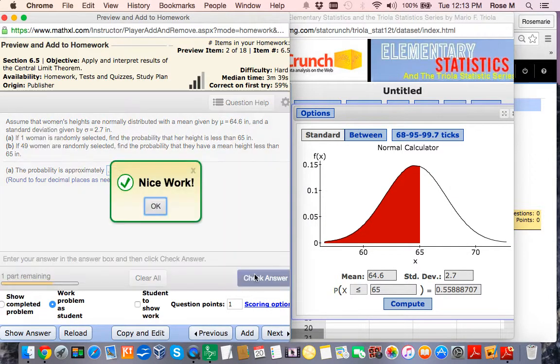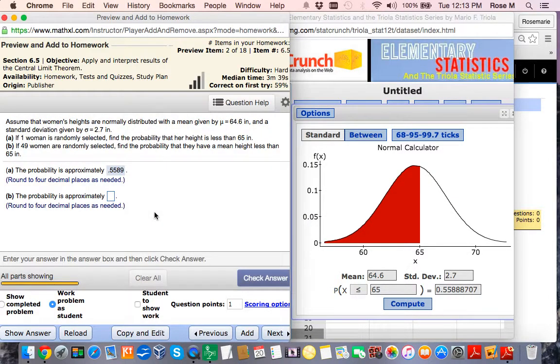And hit check answer. Now the second part involves using the Central Limit Theorem, because now we're selecting 49 women. And when you're using the Central Limit Theorem, you have to remember that the standard deviation changes. You take the population standard deviation and you divide it by the square root of the sample size.